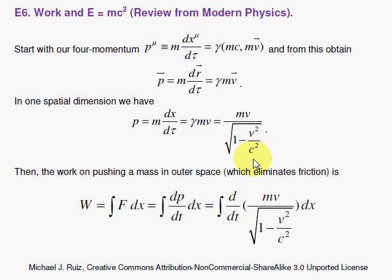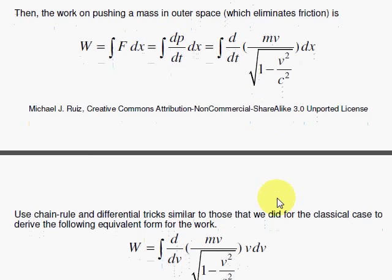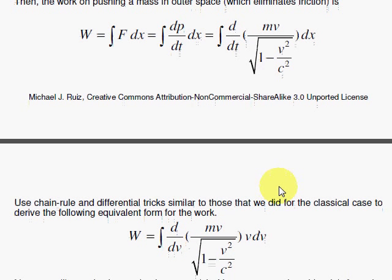Now when v is small compared to the speed of light, you have the mv. But in the relativistic case, we have to deal with this. Now our first step is going to be playing with some chain rule tricks.